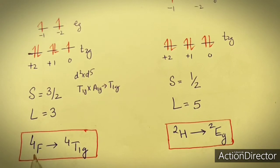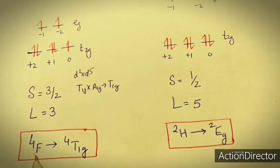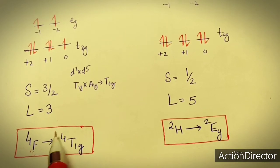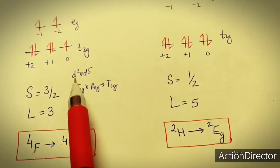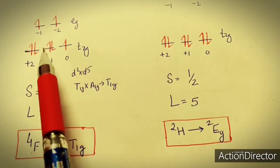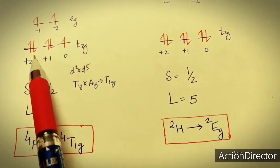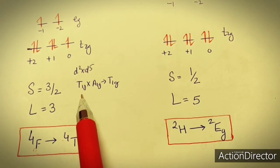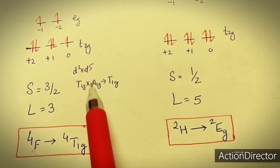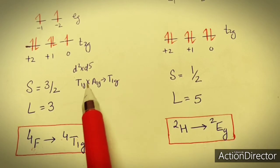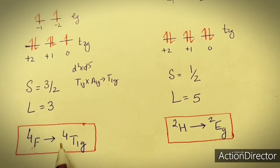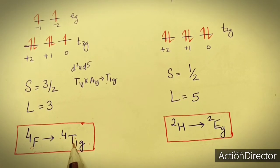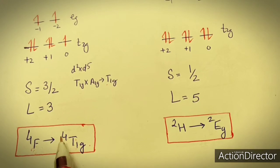So 4F is the ground state term for the free metal ion — this is the atomic term. We have already calculated in the previous lecture that this can be a combination of D5 and D2 configuration. D2 can be referred to as T1G and D5 as A1G, so the product of T1G and A1G is T1G. Therefore, the ground state term for an octahedral complex in weak field is 4T1G.